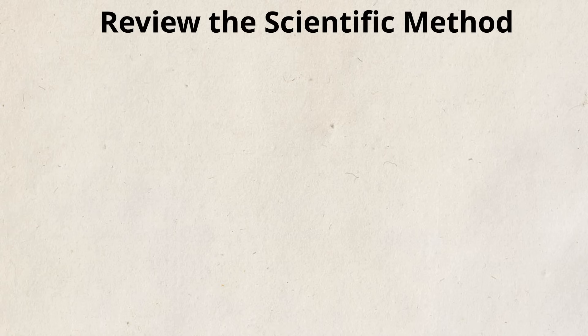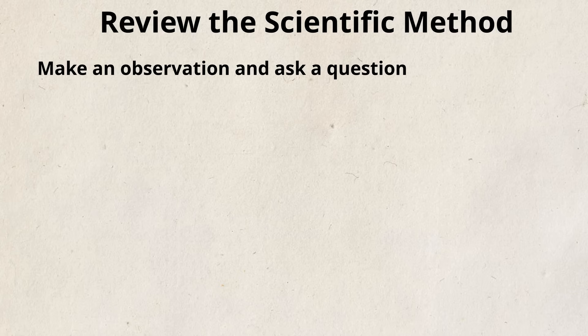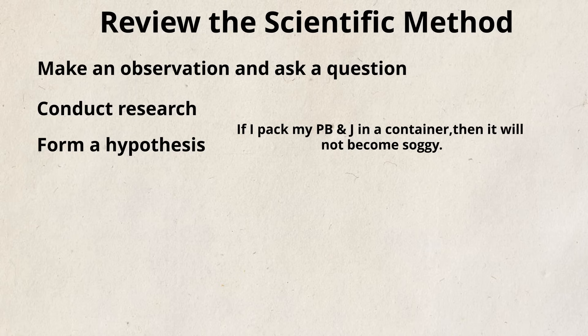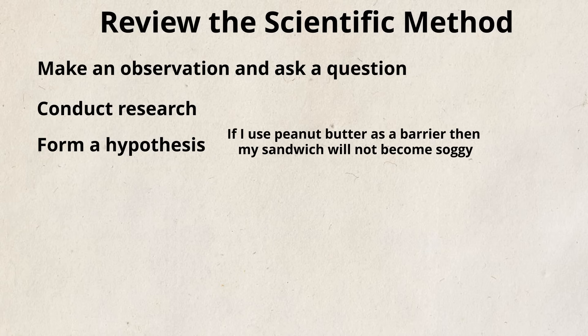Let's review the steps of the scientific method as they relate to our example. Observation: you made the observation that your sandwich was wet on the jelly side, and asked the question, why is my sandwich soggy? Research: you asked friends about their sandwiches and conducted research online. You formed a hypothesis — in fact, two hypotheses. The first was that the bag made your sandwich soggy while a container would not. This hypothesis was not supported, so you made a second hypothesis: that the sandwich-making method determines whether the bread gets wet, and that jelly soaks the bread.